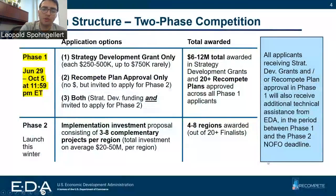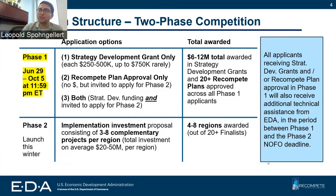I just want to remind folks on the call about the structure of this program. This is a two-phase competition. The first phase is open right now and the second phase will launch this winter. In Phase 1, applicants have the option to apply for a strategy development grant, for a recompete plan approval, or both.